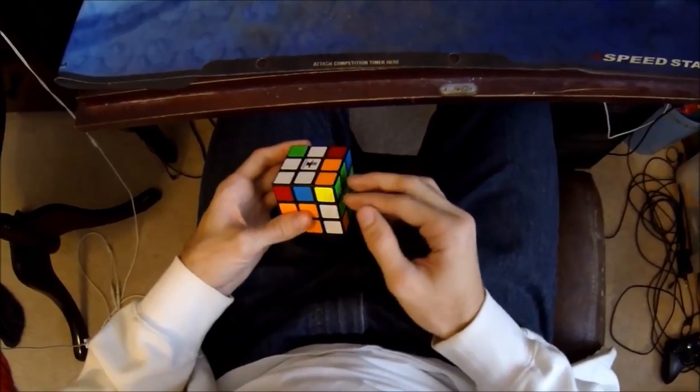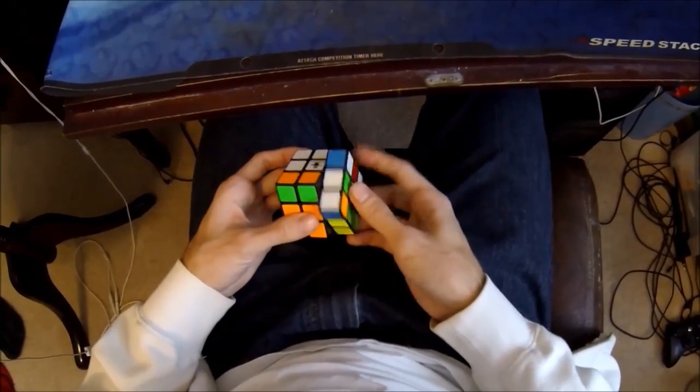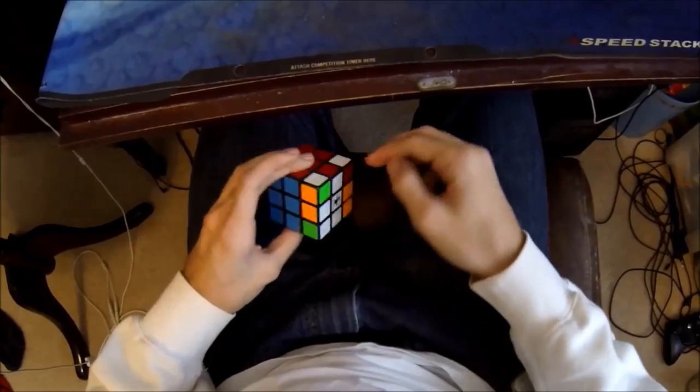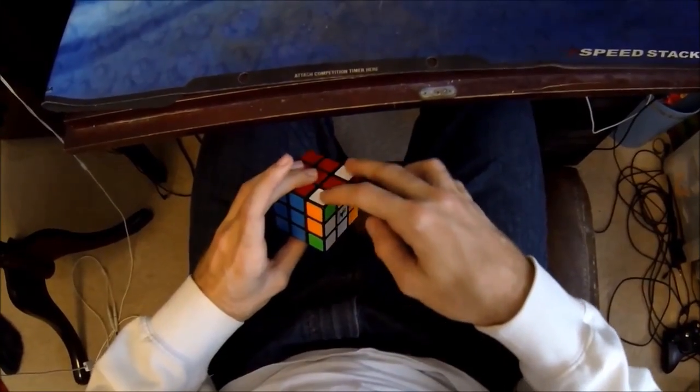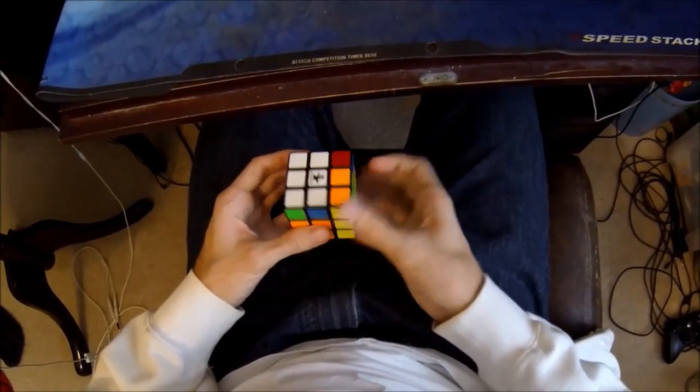So this is an easy one that it's really easy to spot. So you have your pair here, and instead of just inserting it like this, like that, if you can spot that these two corners are facing back, you can go like this. And it skips OLL.